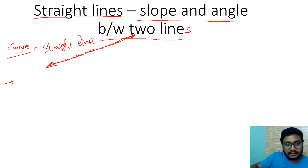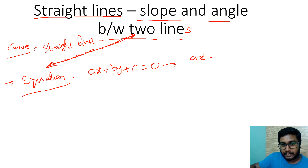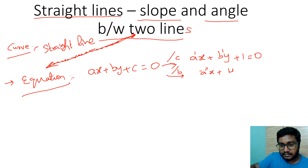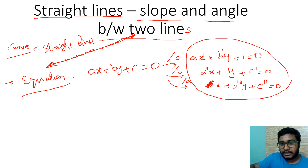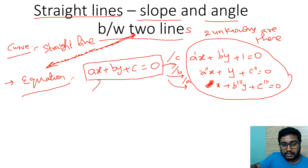The basic equation of a straight line is ax + by + c = 0. By dividing through by different constants, you can rearrange this into various equivalent forms. In any case, there are only two unknowns in the equation of a straight line.